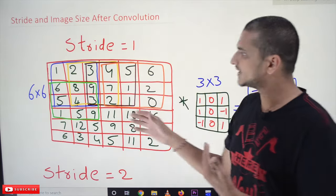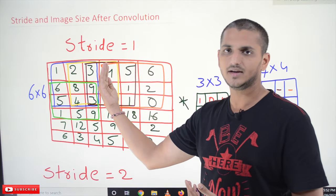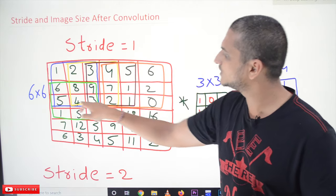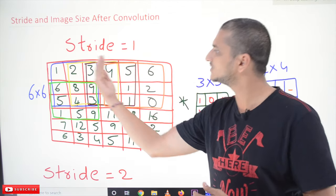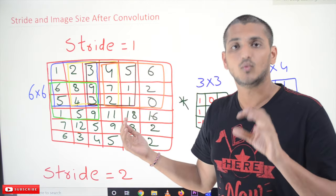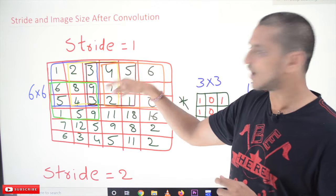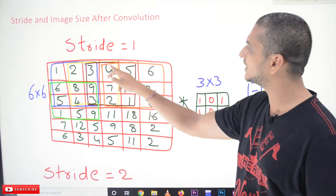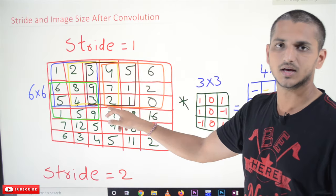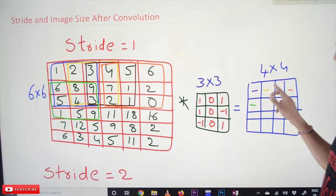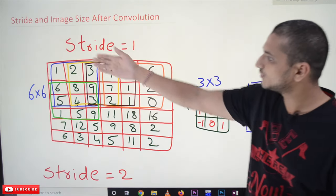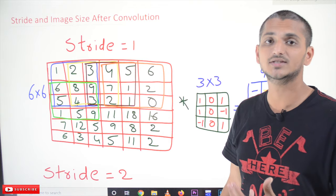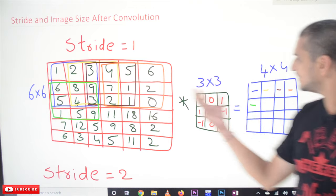Next, we move one step right and do the convolution — here the yellow box is moving one step right. That is what we call stride equals 1. After that, one step right gives the brown color box, then one step right gives the orange color box — total four values. Then we move one step down — that is also stride equals 1. The final image we get here is a 4 by 4 image.